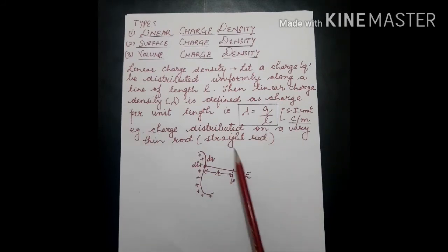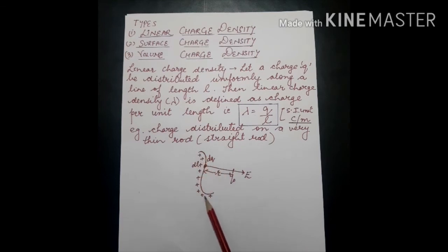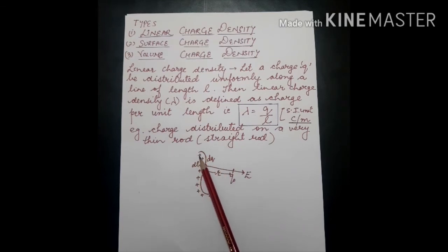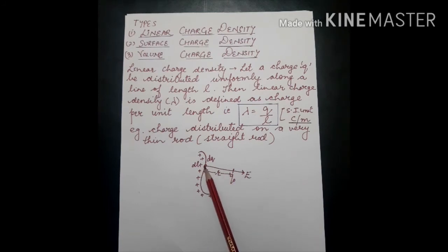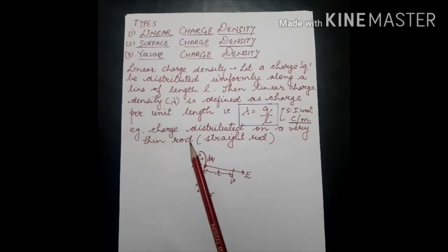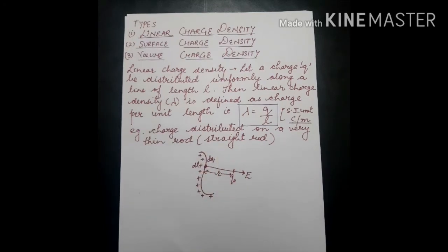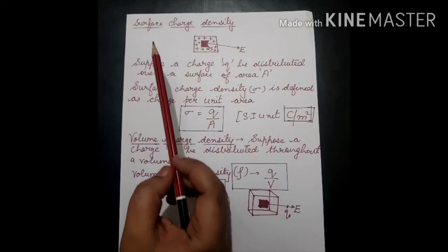To apply this, consider a length L with a small element DL. Let DQ be a very small charge located over that element, and E is the electric field intensity we need to find. Considering the small charge DQ at this point, we use linear charge density to determine the electric field.